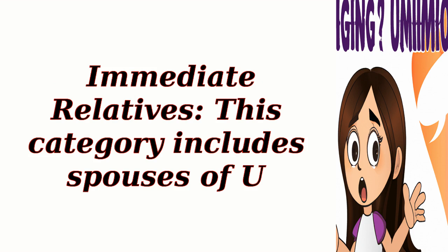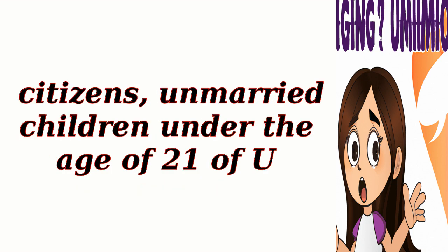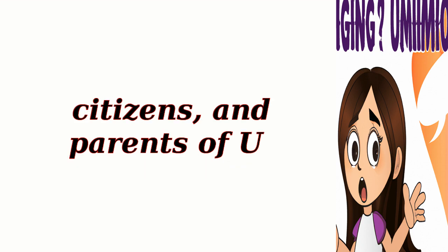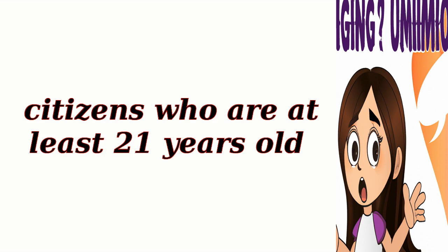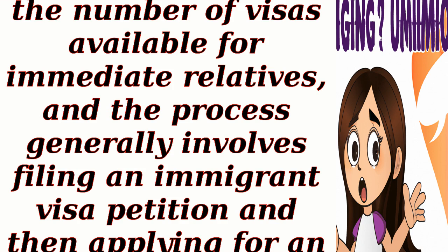Immediate Relatives. This category includes spouses of U.S. citizens, unmarried children under the age of 21 of U.S. citizens, and parents of U.S. citizens who are at least 21 years old. There is no numerical limit on the number of visas available for immediate relatives, and the process generally involves filing an immigrant visa petition and then applying for an immigrant visa or adjustment of status.